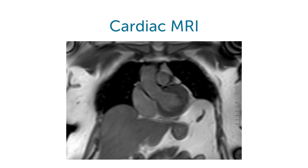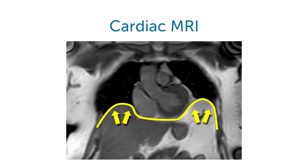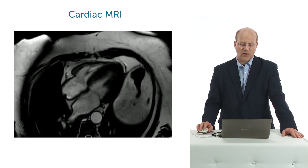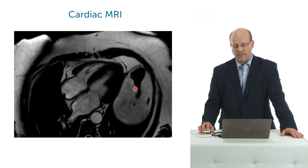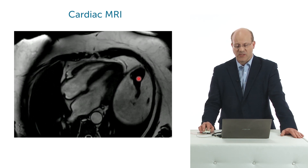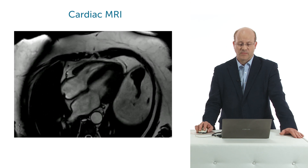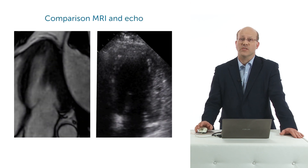So what was the problem of this lady? The explanation came with the MRI result. If you know that MRI shows fat in bright colors, you can clearly see that there is a huge amount of fat in the abdomen under the diaphragm, and this fat is pushing the diaphragm upwards against the heart. That's a very rare finding. In another cut through the thorax, on the left side of the heart you can see the dome of the diaphragm with all the fat pushing against the lateral wall of the left ventricle.